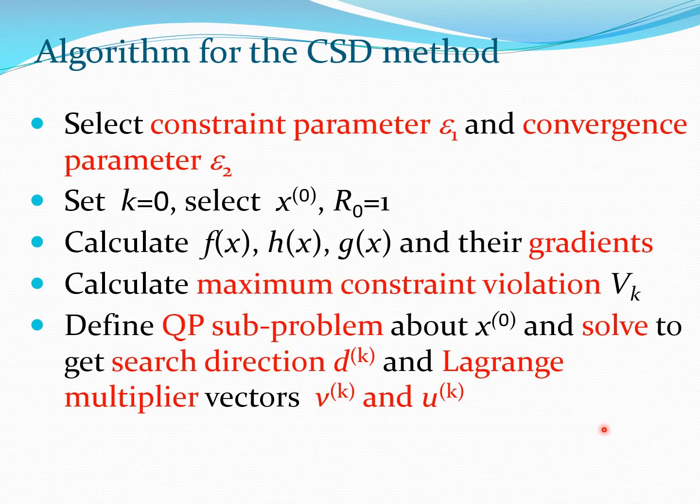Let us now write down the basic steps which you can use to write a computer program for the CSD method. You start with two small numbers: a constraint parameter epsilon 1 and a convergence parameter epsilon 2. We put K equals 0, select a starting design, and put R_0 equals 1 as a starting value of that penalty parameter.